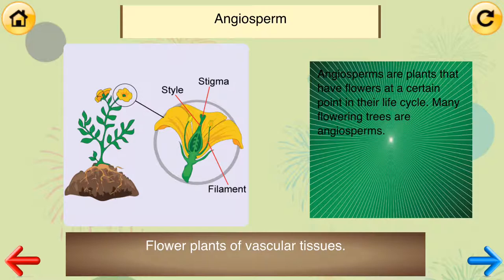Angiosperm: flowering plants of vascular tissues. Angiosperms are plants that have flowers at a certain point in their life cycle. Many flowering trees are angiosperms.